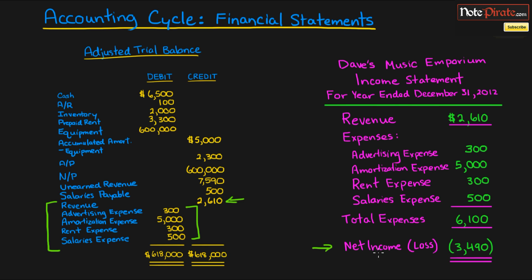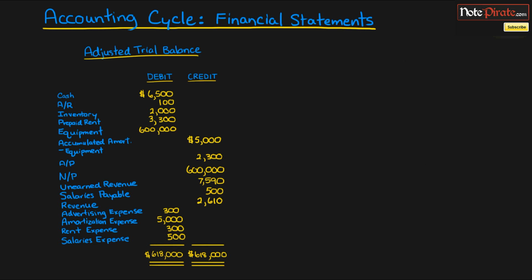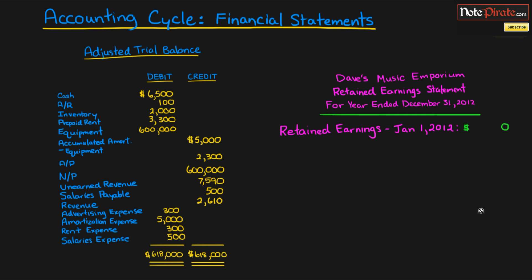As you can see, we have net income or a net loss in brackets. Because it's in brackets, this is a net loss — we have not performed well for this fiscal year. Now that we have the net loss, we can carry this number over to the second financial statement: retained earnings. We need that net income number in order to prepare it, which is why the statements always go in order.